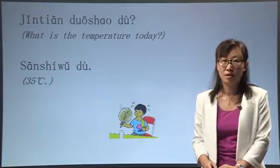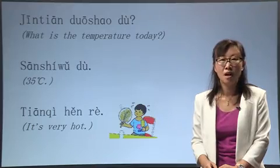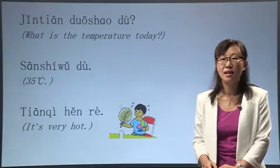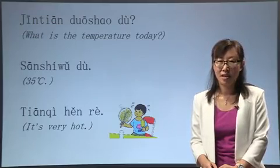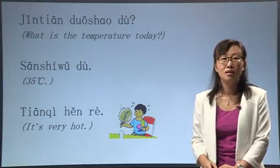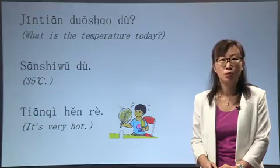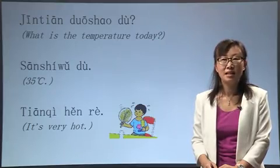So it's very hot — 天气很热. Hot is 热. Don't pronounce it as 乐 or the wrong way — it's 热. 天气很热. Now let's practice. If I ask you 今天多少度? If it's 35 — 三十五度. And you would describe 天气很热.